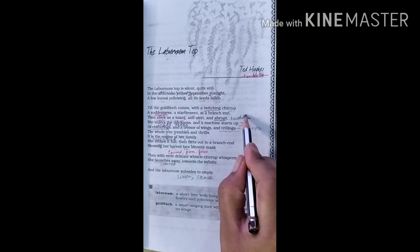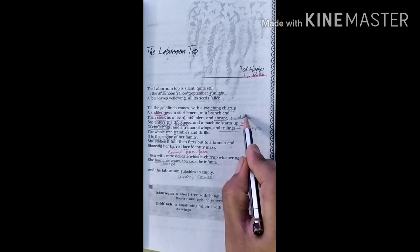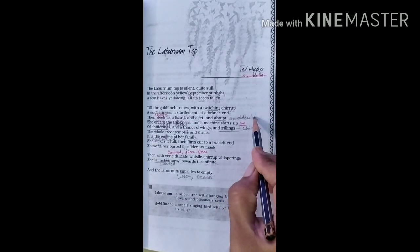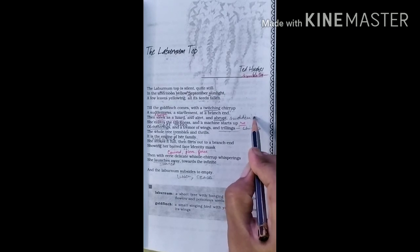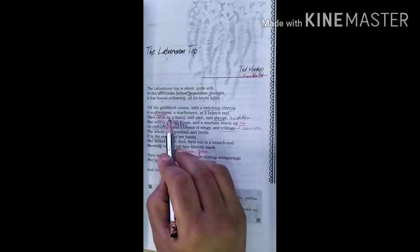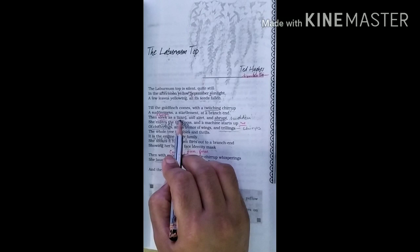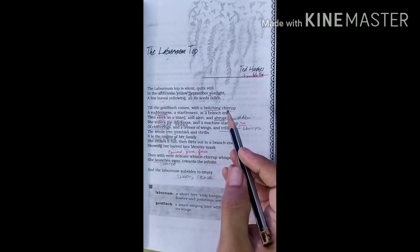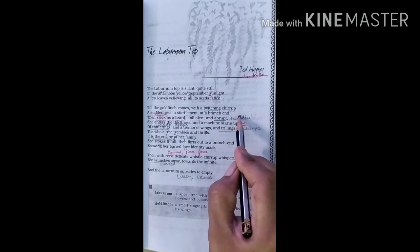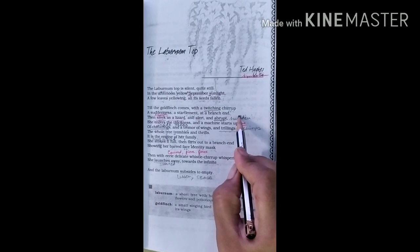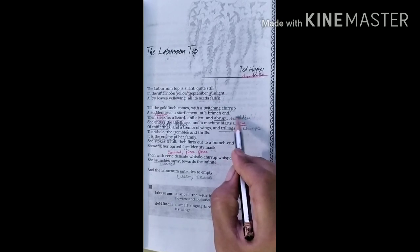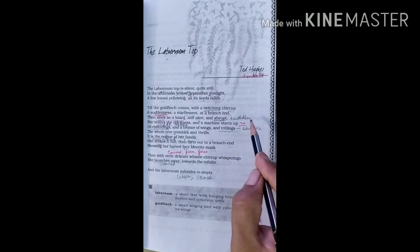Then in the second stanza, the sudden arrival broke the silence of the tree. The bird arrives at the end of the branch with the chirrup. Then she abruptly, quickly, suddenly enters the thickness of the branches just like a lizard. So comparison is being made by the poet. As she arrives, it seems as if a machine has started. Why? As the young ones of the goldfinch are filled with excitement and start creating noise on the arrival of their mother. They start chirping and fluttering their wings. With their chirrups and movements, the whole tree comes alive and it trembles and thrills.